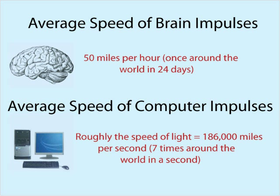It doesn't even travel at 7 miles a second, an appropriate speed for a space vehicle orbiting the Earth. Instead, it travels about 50 miles an hour, a speed typical of an ordinary car on a back road. This speed is still impressive if we recognize that our impulse is a chemical impulse rather than an electrical one, but so far as brains and computers go, it creates a real tortoise and hare situation.